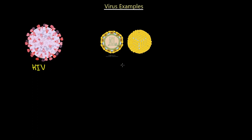Next is the Zika virus, which doesn't typically have a large envelope like HIV. It kind of looks like a volleyball with protein shapes all around the capsid. This is a very scary virus we've encountered recently.